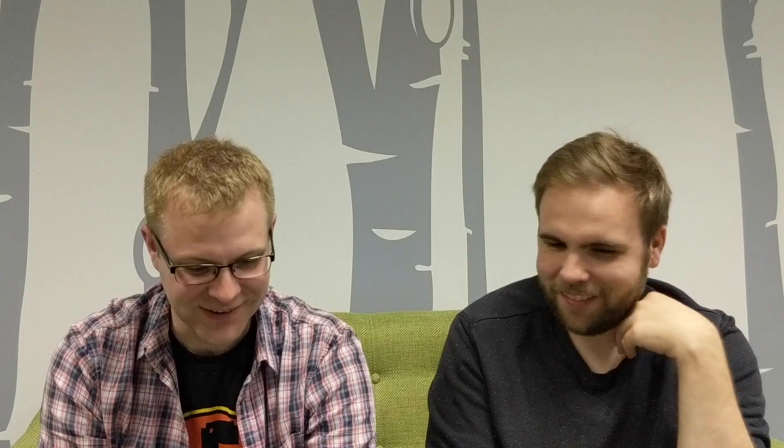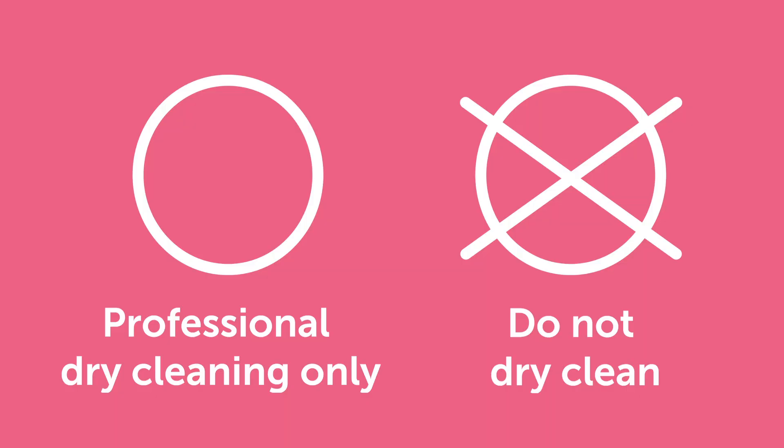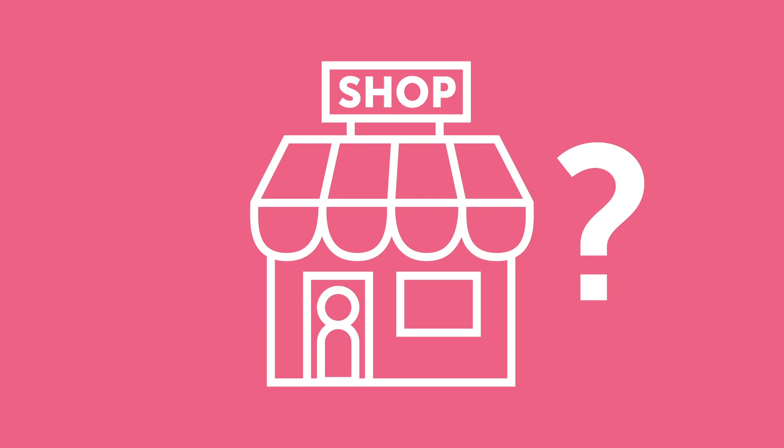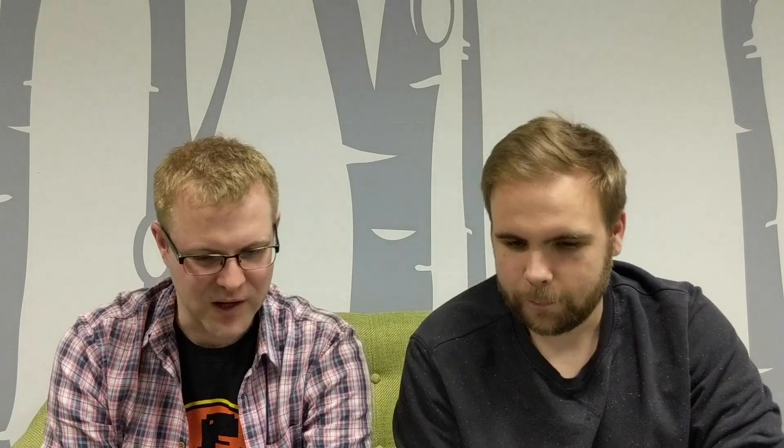What about this one — a circle on its own? The circle in the square was tumble dry, so a circle alone — dry it naturally? No, it means professional dry cleaning only. How does that signify dry cleaning? It just does. Why not a little icon of a shop? Because they can't draw a picture with enough resolution. With a cross through it — do not dry clean.